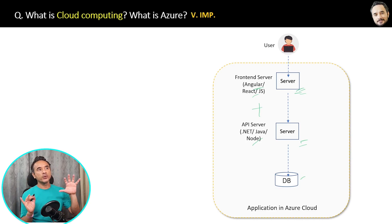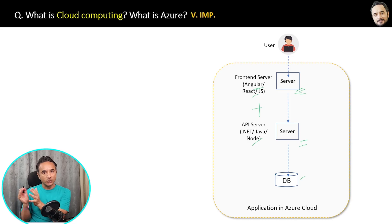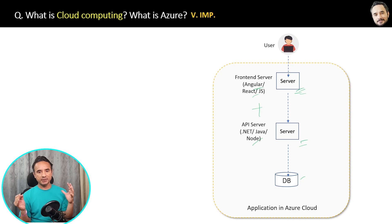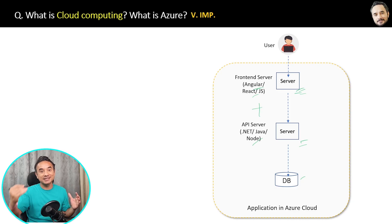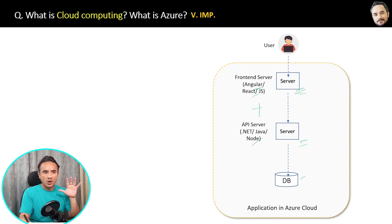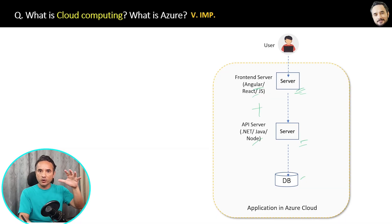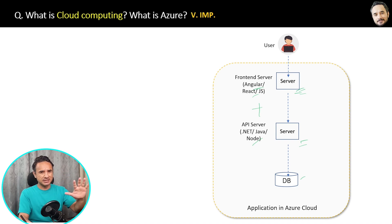Cloud computing is a concept, but Azure, AWS, and Google Cloud are the implementations of that concept. For example, a car is a concept, but BMW, Mercedes, or Audi are implementing the car concept — same way. So cloud computing means all these servers and databases are present at some common location. In the case of Azure, all servers and databases are present in Microsoft's offices.